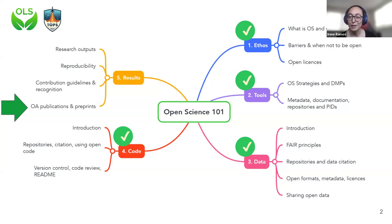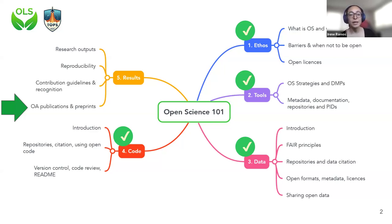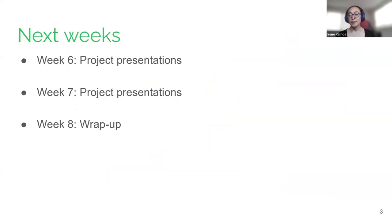We're going to review even some of the values that are the foundation of open science, and use concepts like persistent identifiers and repositories — hopefully these are starting to sound more familiar to everyone. Even though this is the last training session, we still have three weeks to go. The next two weeks are going to be dedicated to project presentations.